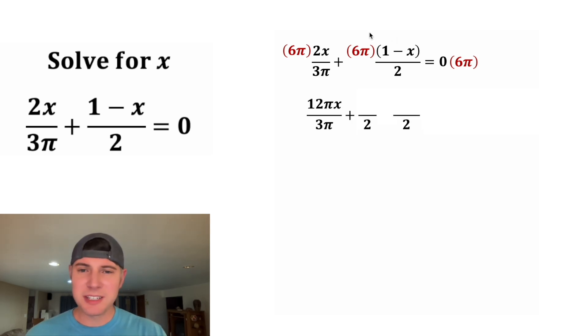For the first one, 6π times 1 is equal to 6π. And then we're going to subtract, and 6π times x is 6πx. And on the right-hand side, 0 times 6π is still 0.